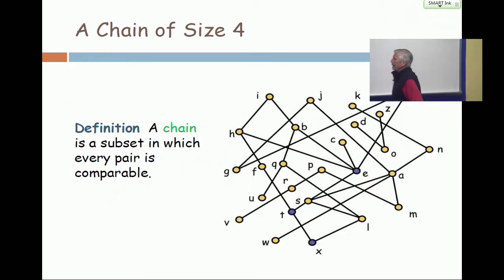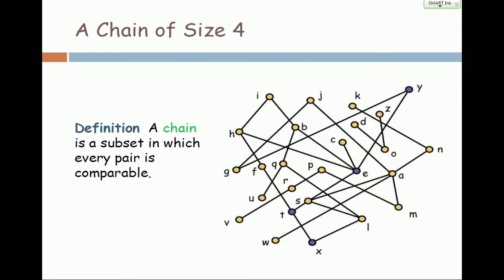We talked about this, so this is a repeat, but that's okay. A set of points in which every pair is comparable is called a chain.